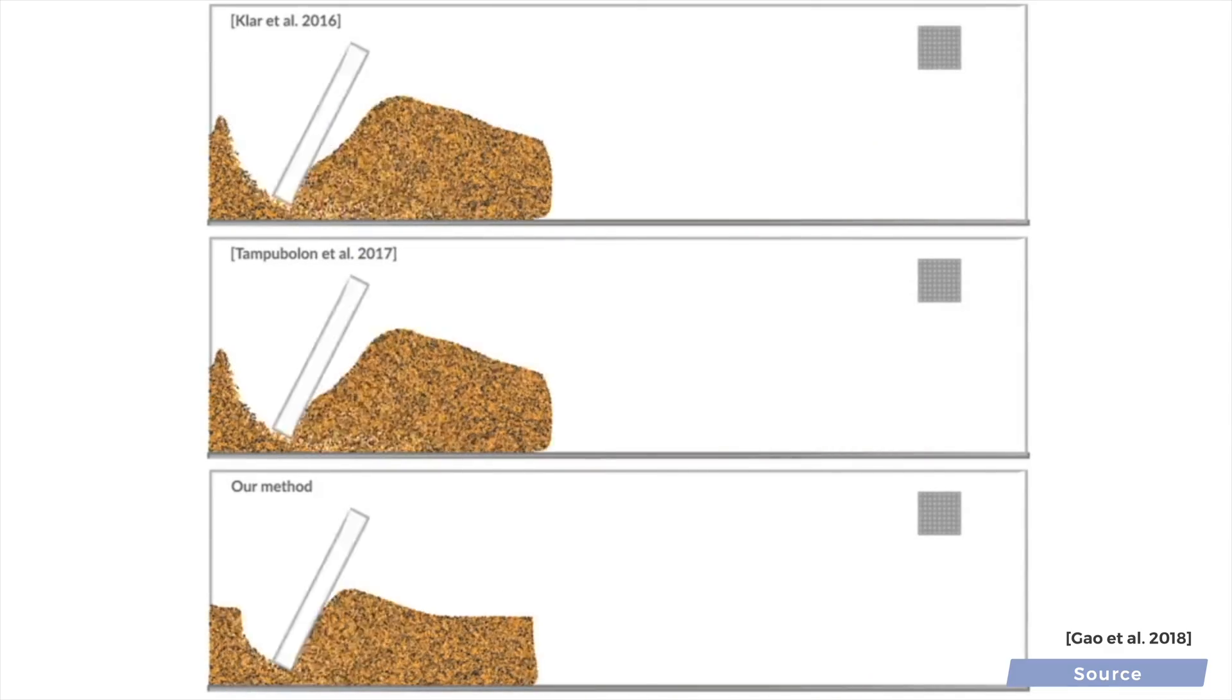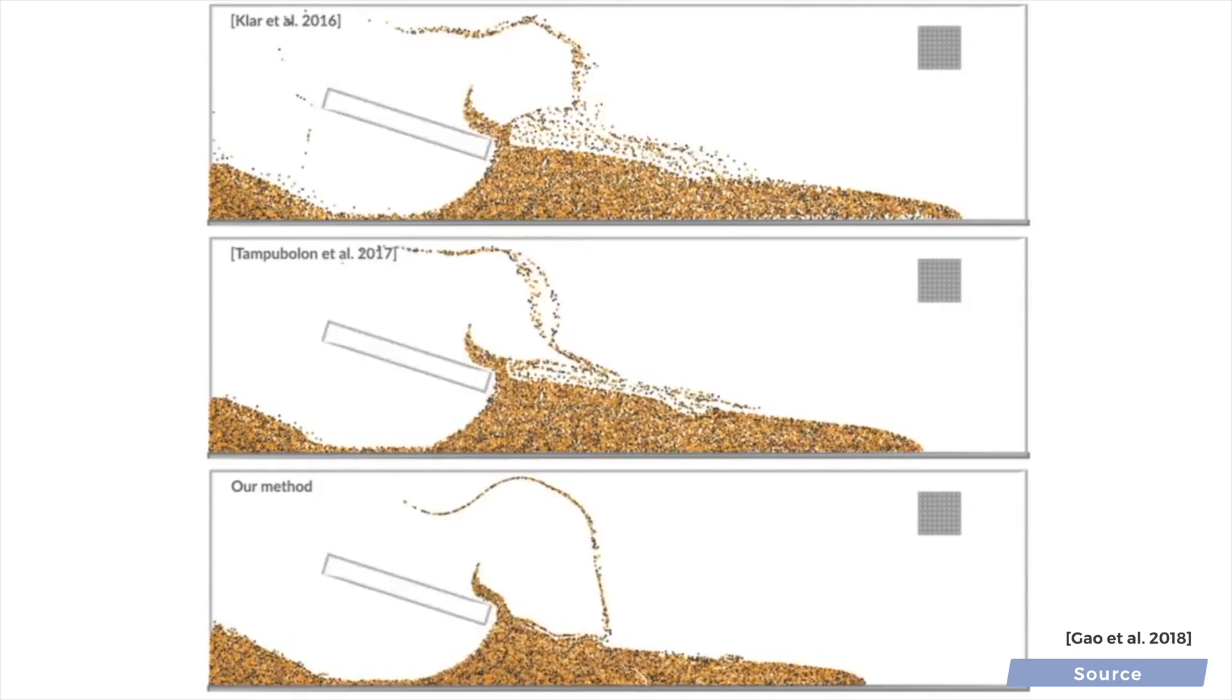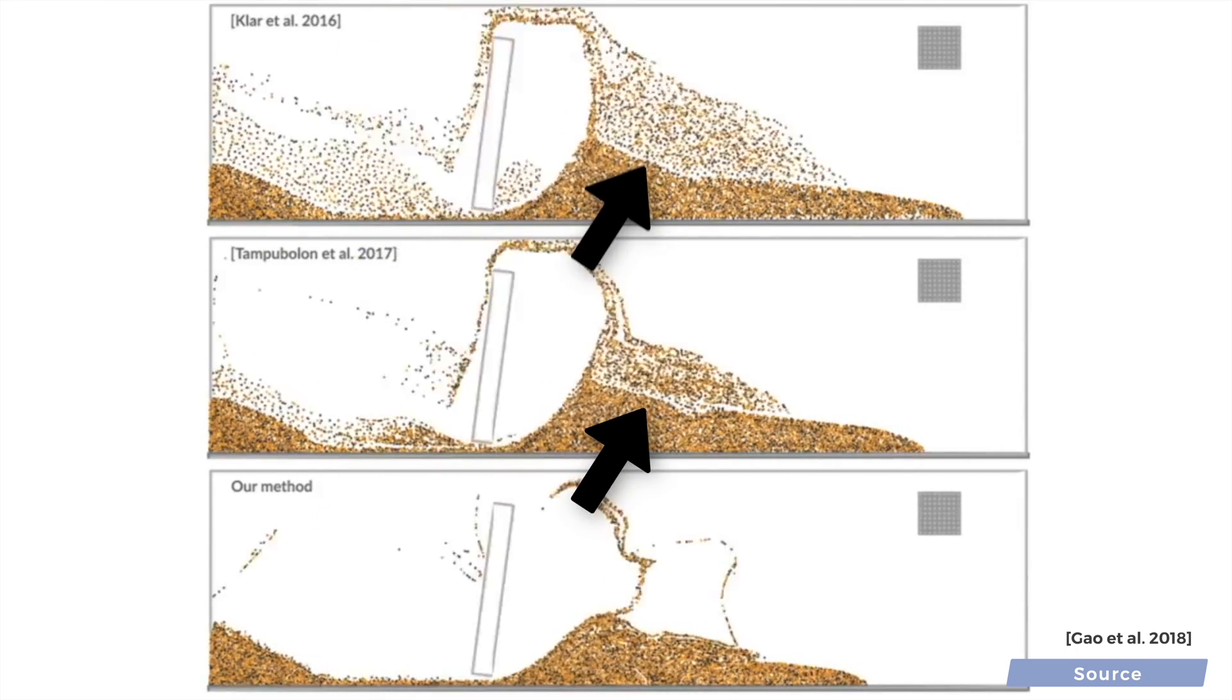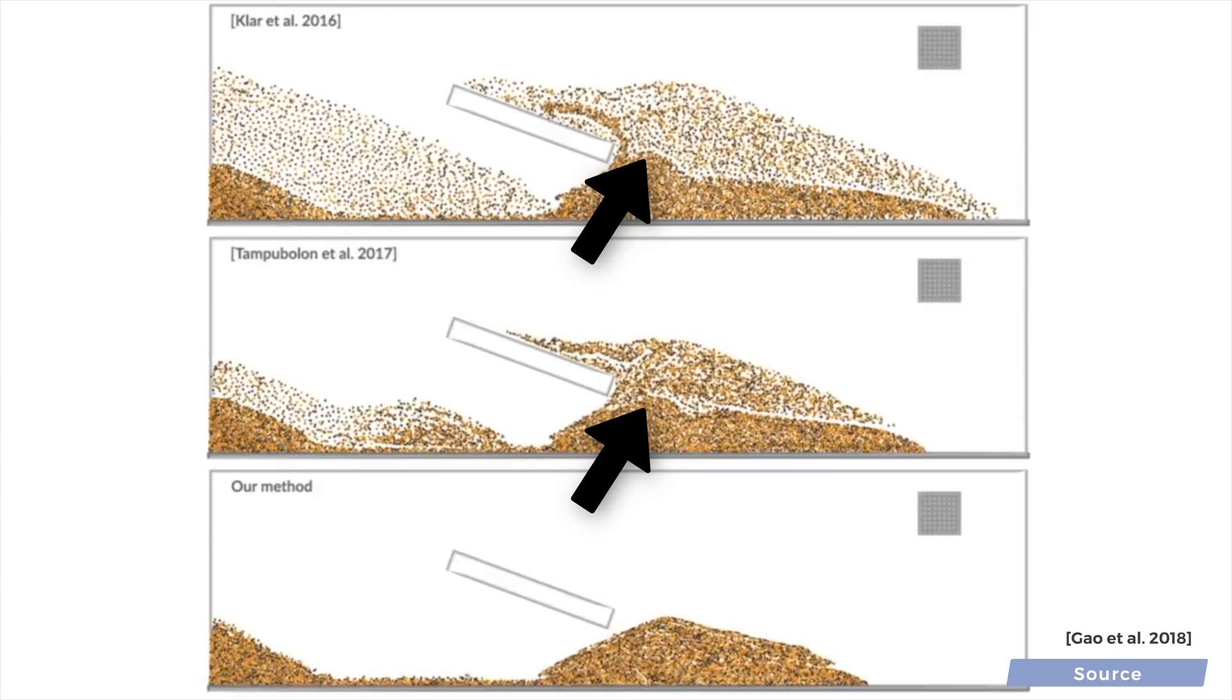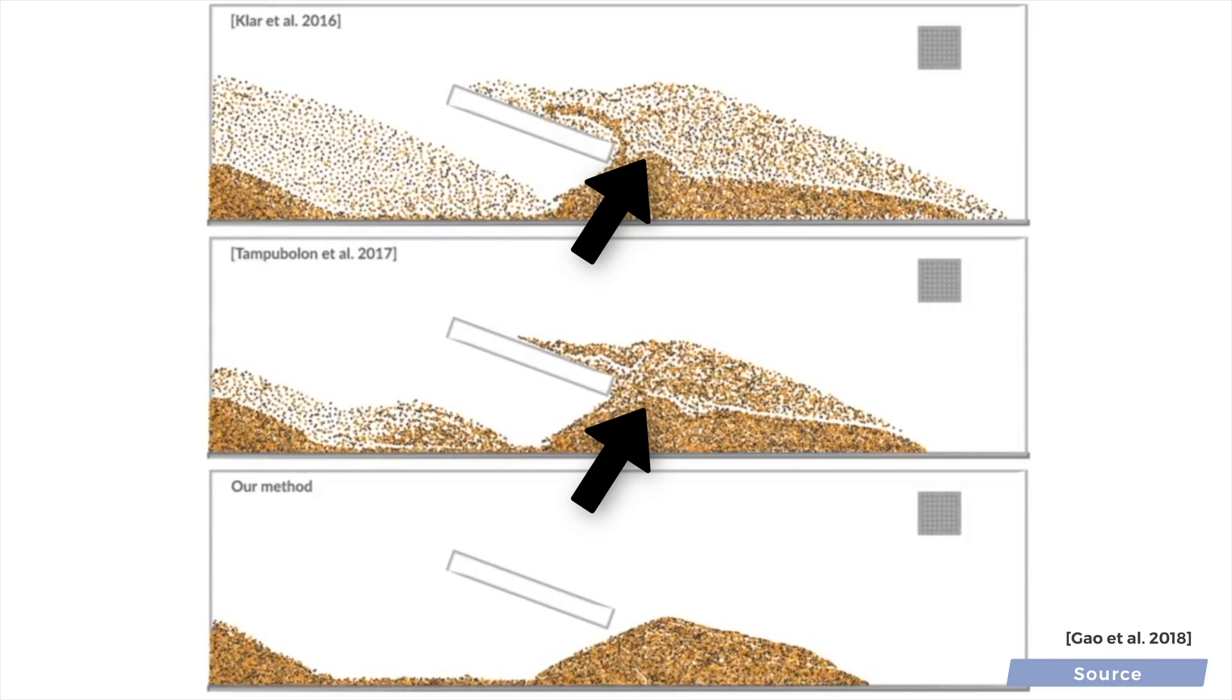If we try to run this elastoplastic simulation for these two previous methods, they introduce here a gain in density, or in other words, we end up with more stuff than we started with.